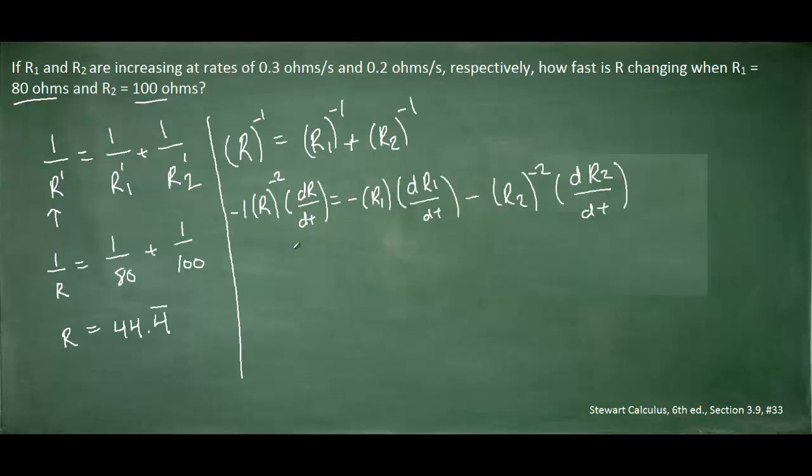Finally, at this stage of the problem, we can simply insert all of our known values. And we're solving for the rate at which R is changing, so we're actually solving for the following right here. The rate at which R1 is changing and the rate at which R2 is changing are both given in the problem. So those values can be found right here. This is the rate at which R1 is changing, and this is the rate at which R2 is changing. So let's go ahead and plug in the known values.